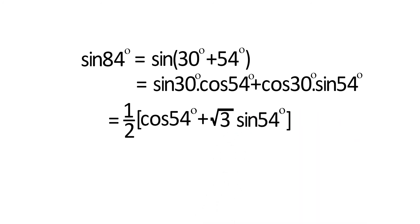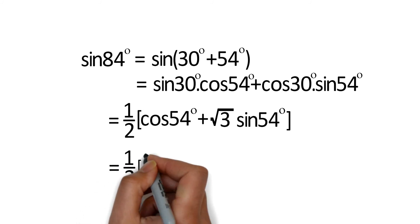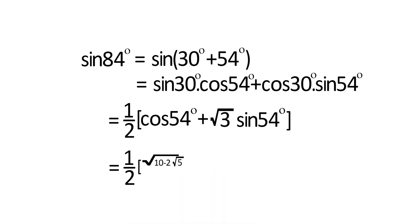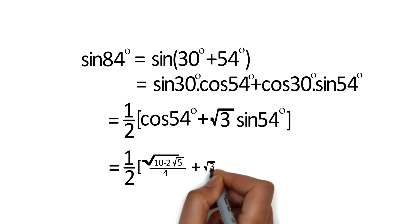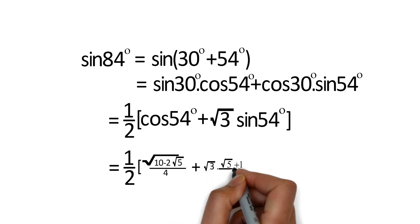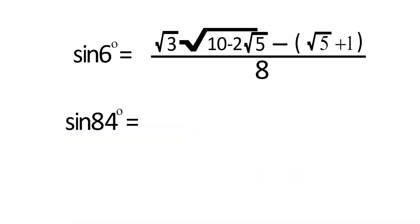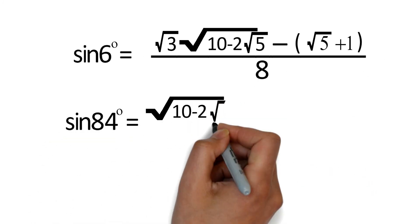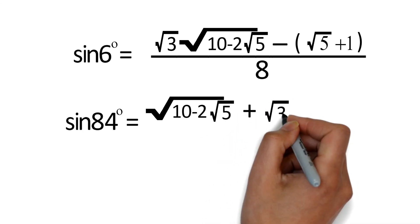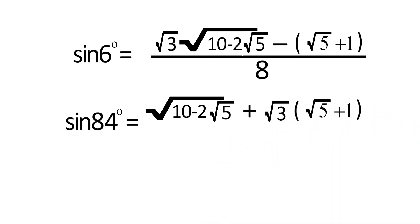After substituting the values of sin 54° and cos 54°, we get sin 84° = (1/2)(√(10 - 2√5)/4) + √3 · (√5 + 1)/4. After simplifying, we get sin 84° = (√(10 - 2√5) + √3(√5 + 1)) / 8. If you have any questions you can ask me below.